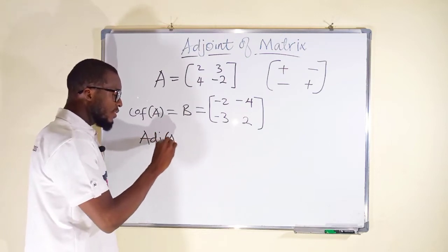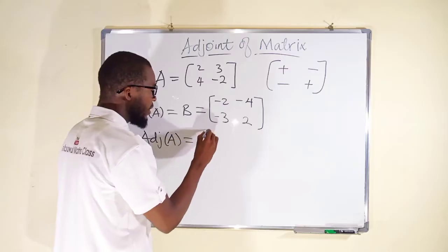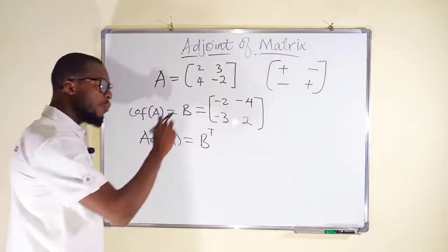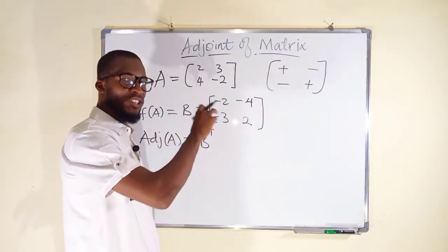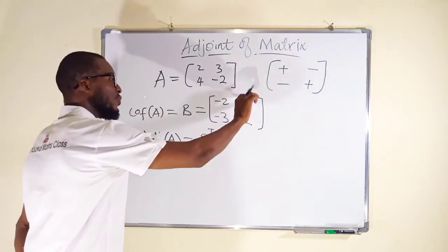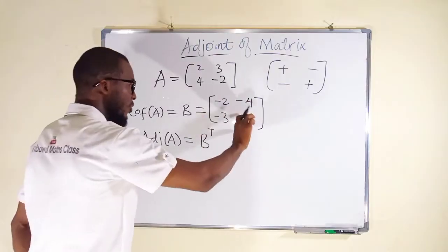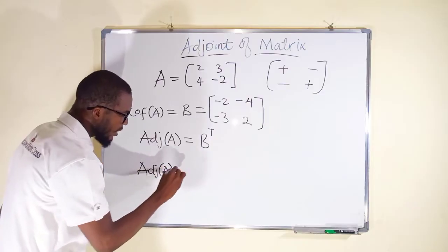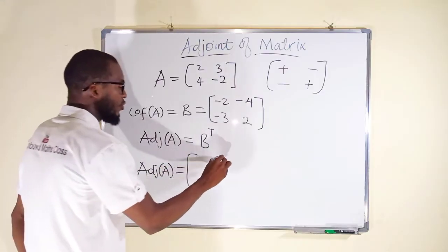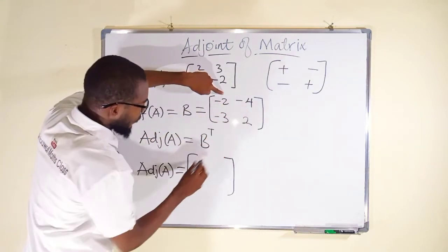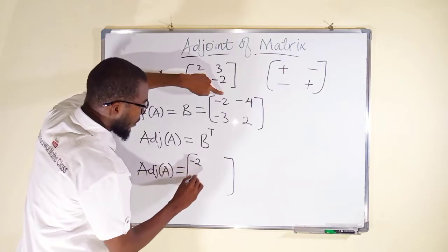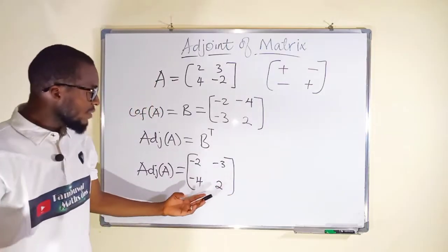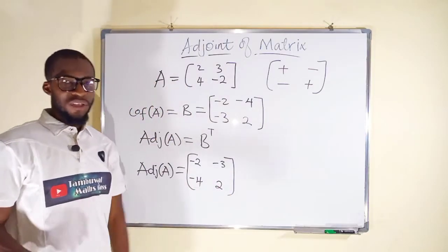The adjoint of matrix A is B transpose, where B is the cofactor matrix. To find the transpose, we interchange rows and columns: take the first row and assign it as the first column, take the second row and assign it as the second column. The adjoint of matrix A is therefore: first column negative 2, negative 4; second column negative 3, positive 2 — a 2x2 matrix.